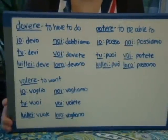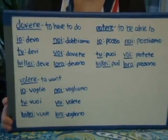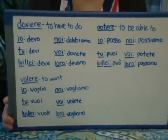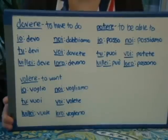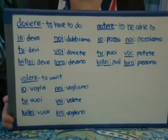Some verbs are irregular, like dovere, potere, and valere. The endings of these verbs are shown below.